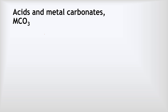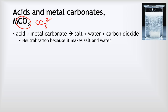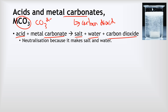Next, the reaction of acids and metal carbonates. A metal carbonate is any compound that contains the CO₃²⁻ ion. These react with acids in a slightly more complicated way: the acid and the metal carbonate produce salt, water, and carbon dioxide as well. I always link the carbon in carbonate with the carbon dioxide as a memory aid. This means we'll see lots of bubbling and fizzling as the CO₂ gas is released. Although CO₂ is produced, this still counts as a neutralization reaction because it makes salt and water.